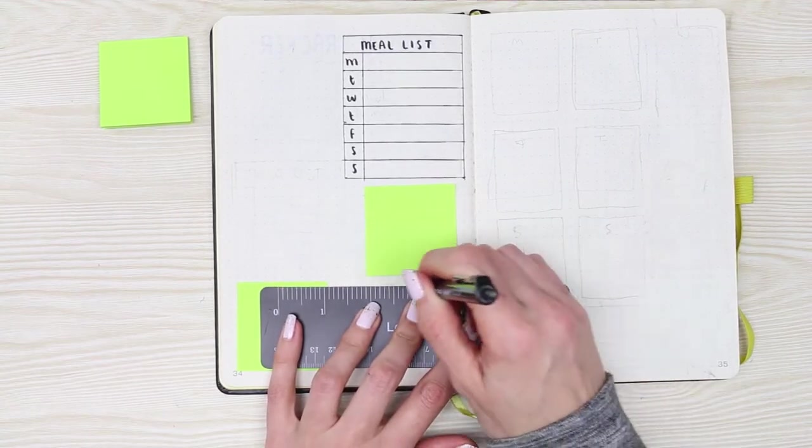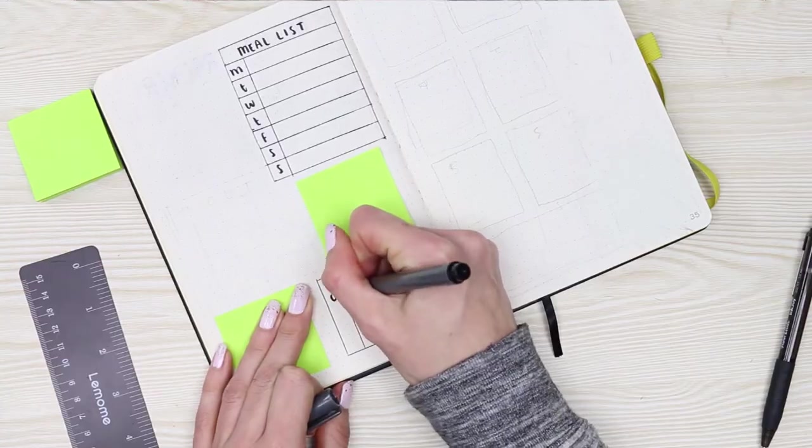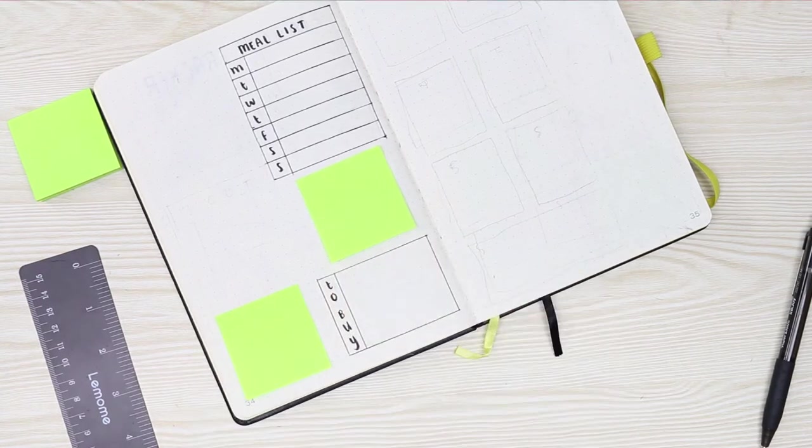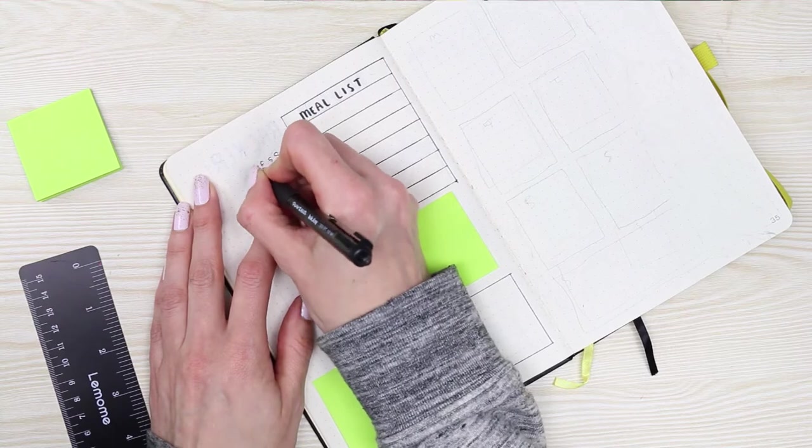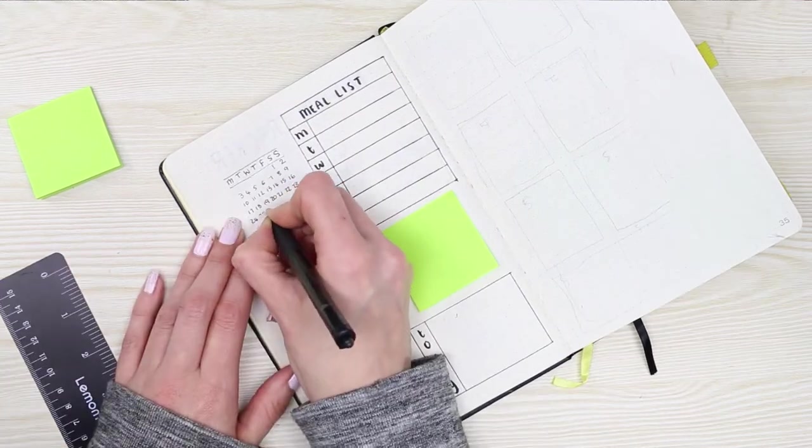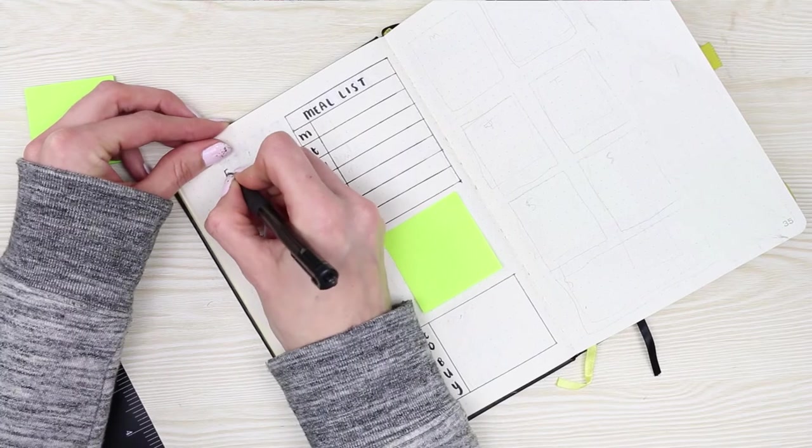Post-it notes are just really handy to have in your bullet journal because you can pick up information easy from one Post-it note and then flip it to another week and stick it there. Or you can just take it out and take it with you if it's a shopping list. I just find them super handy, so I wanted to include some of those in my spread.